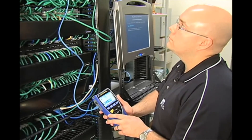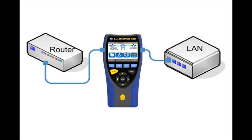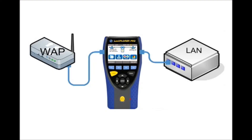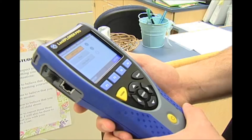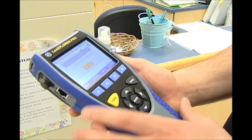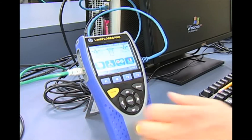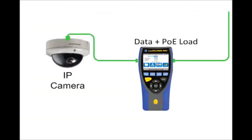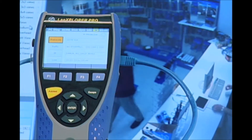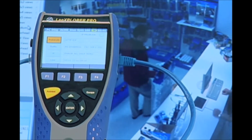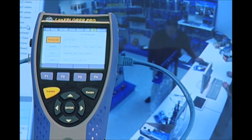The traffic seen by LAN Explorer depends on where it is placed in the network. Putting it in line between the internet router and the LAN will allow it to see all internet traffic coming in and out of the network. Placing it between a wireless access point and the network will let it see all the wireless activity on that AP. Placing it between a PC and the network will allow it to diagnose issues preventing that computer from connecting. When connected between an IP CCTV camera and the network, it will show the real-time bandwidth generated by the camera, so you can see how changing settings such as resolution, frame rate, and video compression impact network performance.